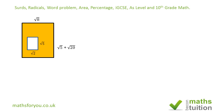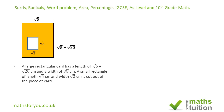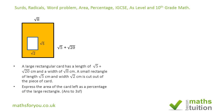Essentially we've got a rectangle of length (√5 + √20) and width √8. From the rectangle we've cut out a small piece which is √5 by √2. While I'm solving the problem, I'm going to keep √5 × √2 in mind.